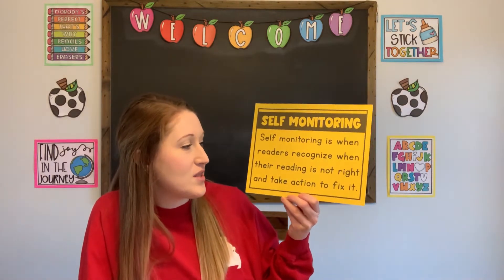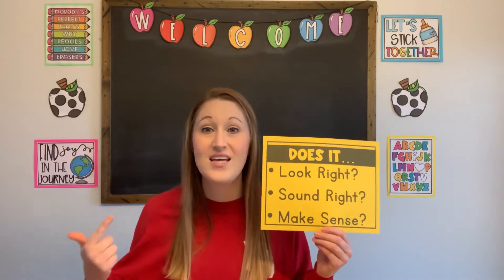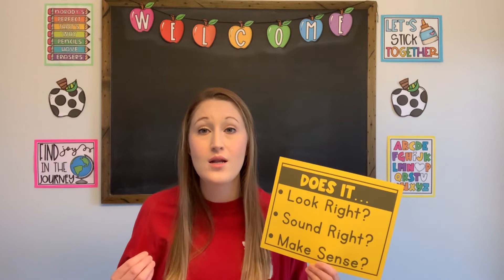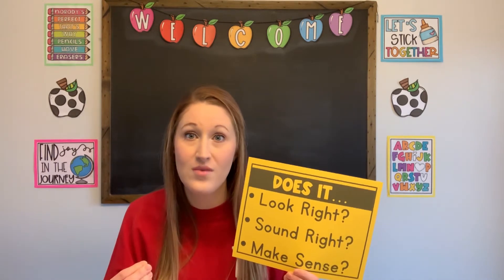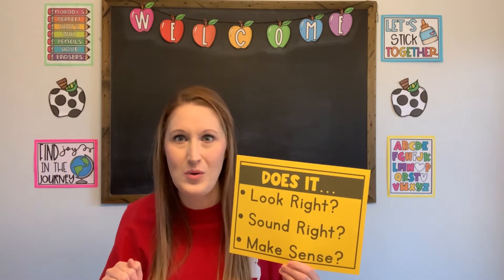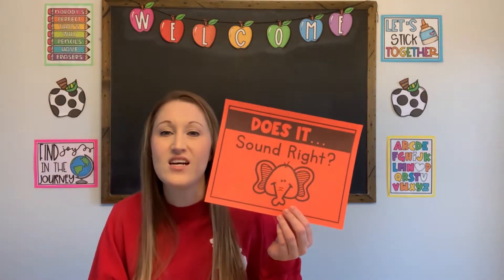This week we're talking about how to become more fluid readers by self-monitoring our reading. As a reminder, self-monitoring is when readers recognize when their reading is not right and they take action to fix it. As good readers who self-monitor, we ask ourselves: Does it look right? Does it sound right? And does it make sense? Yesterday we dived into 'Does it look right?' and talked about how letters have to look right — if we mix up, add, or remove letters, words won't look quite right.